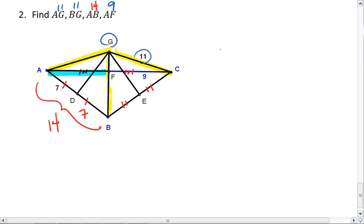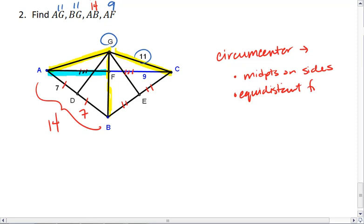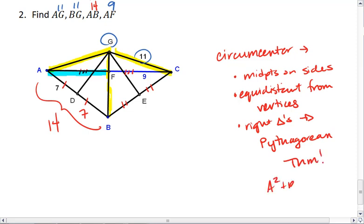Okay, so three things to look for if you have a circumcenter. We have midpoints on sides, we are equidistant from the vertices. And we can have right triangles, which lead us to using the Pythagorean theorem of A squared plus B squared equals C squared, where C is your hypotenuse.